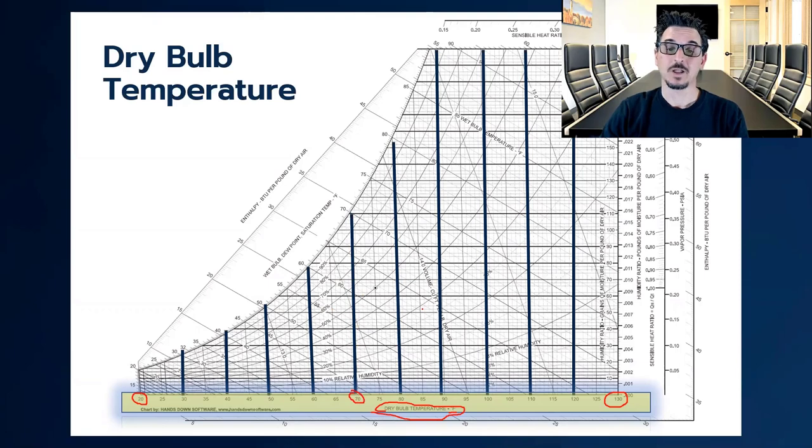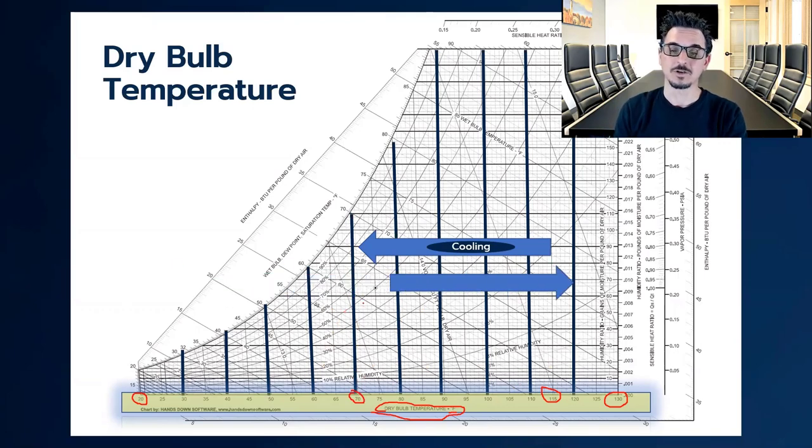Now let's look at what happens when we cool air. When we move from right to left, in this case approximately 115 degrees down to 70-ish degrees, we are cooling the air obviously. We're moving from right to left. That's how we cool air. That's the cooling process represented on the psychometric chart.